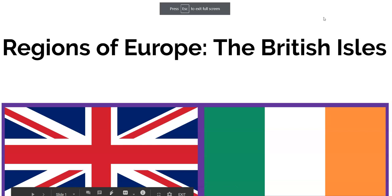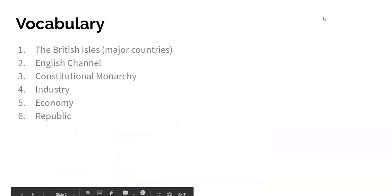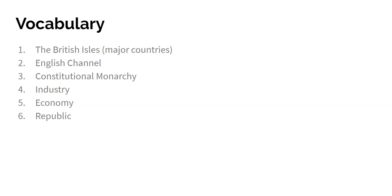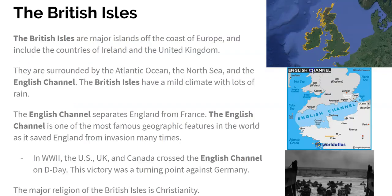The British Isles. The vocab words for today are the major countries in the British Isles, the English Channel, constitutional monarchy, industry, economy, and republic. You probably have heard of some of these words before. Industry and economy we talked about during our South America unit with the Amazon rainforest and how Brazil is cutting down those trees to help their economy, so that could be some review.